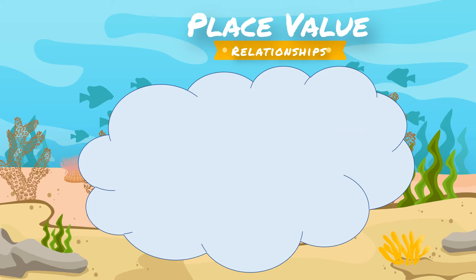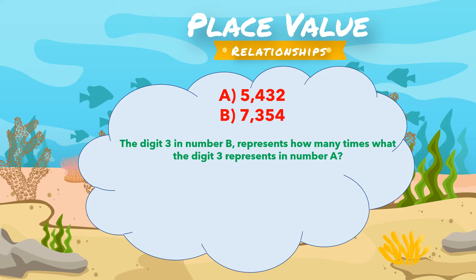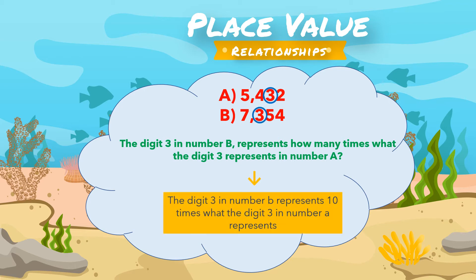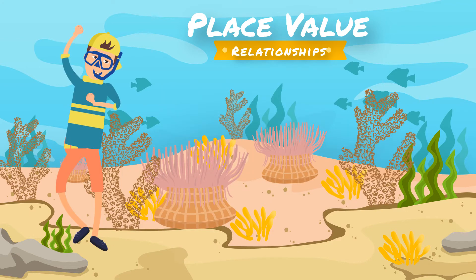Based on this, can you answer the following question? Number A is 5,432 and number B is 7,354. The digit 3 in number B represents how many times what the digit 3 represents in number A? The digit 3 in number B represents 10 times what the digit 3 in number A represents. Because 3 in number A in expanded form is 30, and 3 in number B in expanded form is 300. Interesting, right? So, for a coral reef, an increase of 1 degree is not the same as an increase of 10 degrees. See you at the surface!